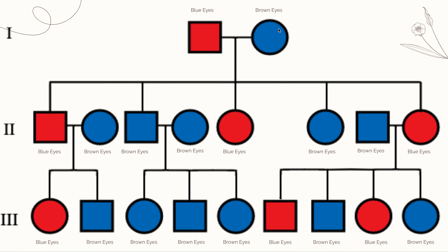Now let's look at this pedigree chart. I decided we're going to follow the trait for eye color. Our affected individuals are going to have blue eyes while our unaffected individuals will have brown eyes. All of my red individuals are labeled with blue eyes, and all of my blue individuals are labeled with brown eyes because they're not affected.